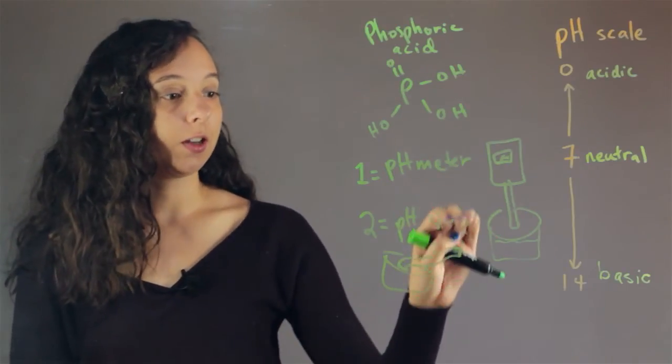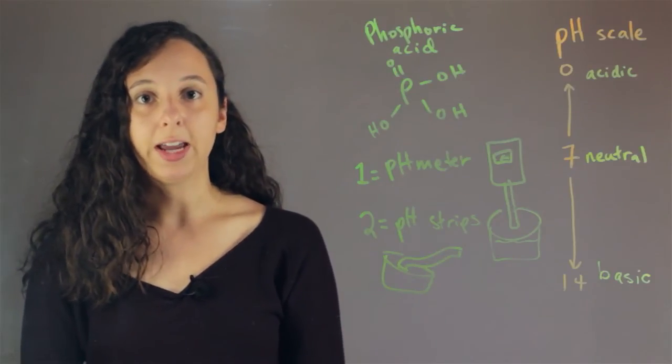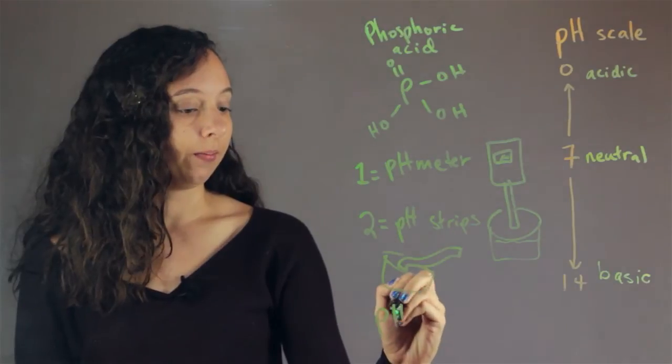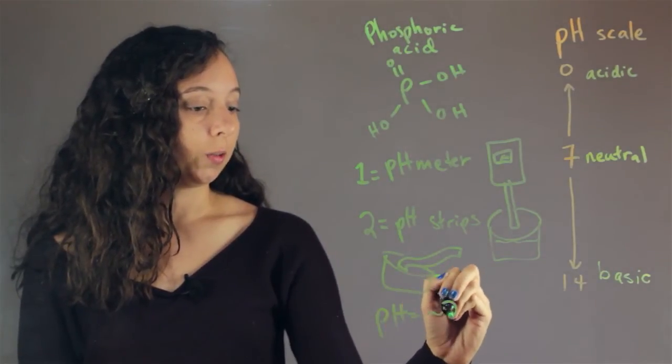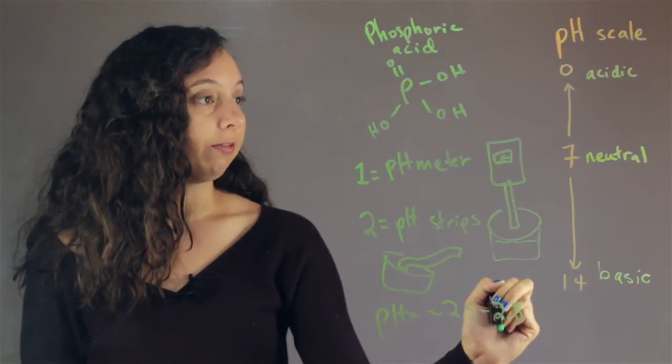So, these are two basic ways that we could measure the pH of Coke even without knowing how much phosphoric acid we had inside. And so, if we do this, we'll find that the pH of Coke is about 2.5 to 2.8, which is safely in the acidic region.